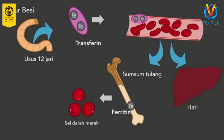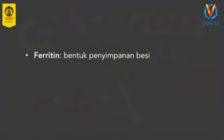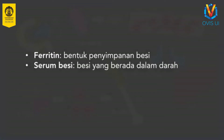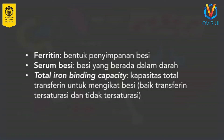Jika dibutuhkan, besi akan dilepaskan dari tempat penyimpanannya dan digunakan untuk memproduksi sel darah merah. Besi merupakan salah satu komponen penyusun heme yang merupakan bagian dari hemoglobin. Sel darah merah yang sudah tua akan dihancurkan di limpa dan melepaskan besi yang dikandung. Besi hasil degradasi sel darah merah ini akan masuk ke dalam aliran darah dan berikatan lagi pada transferrin sehingga daur besi akan berulang kembali. Dari penjelasan tersebut, kita dapat mengetahui bahwa feritin adalah bentuk penyimpanan besi sehingga menunjukkan cadangan besi dalam tubuh.